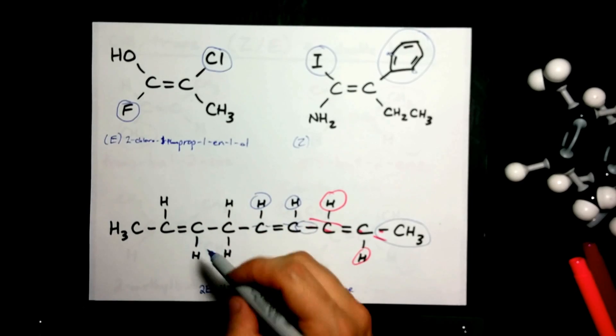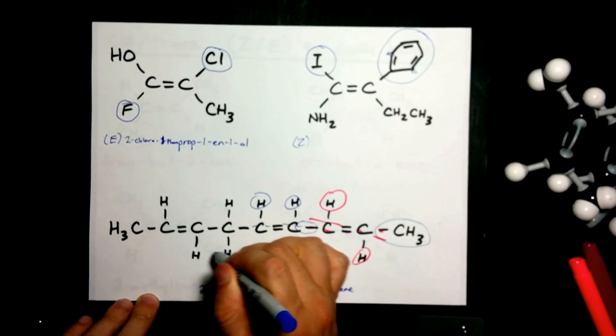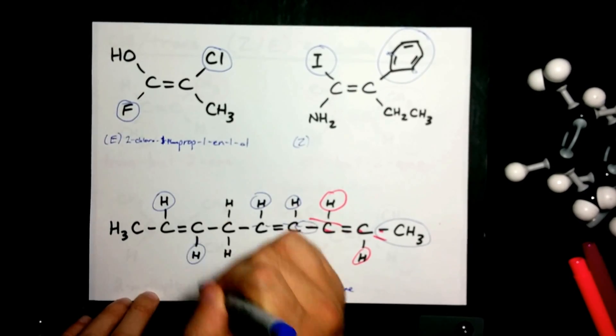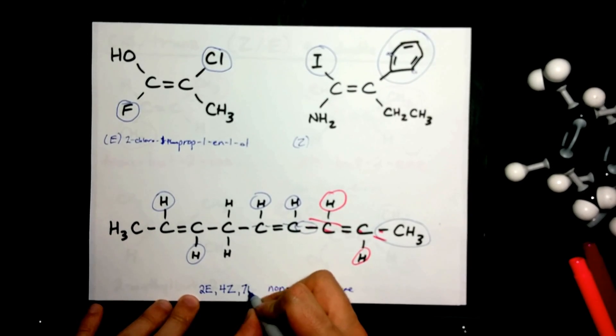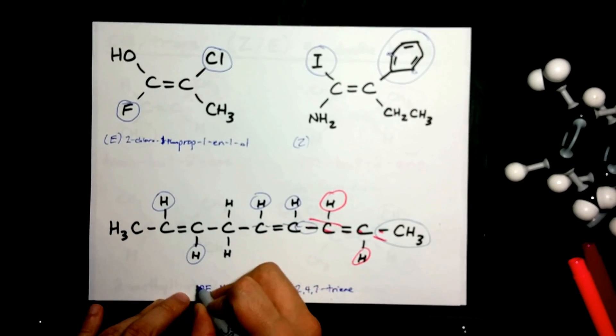And finally, once you get to carbon 7, hopefully, you realize now that you can just compare where the hydrogens are. They're on the opposite sides. So that gives you 7 trans as well.